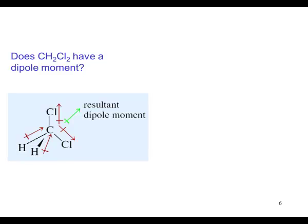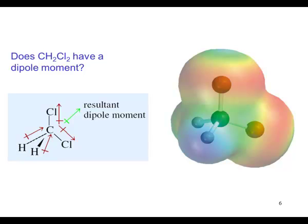Here we have the pull of the electrons toward the chlorines and away from the hydrogens toward the carbon. There is a resultant dipole moment. The molecule is polar.